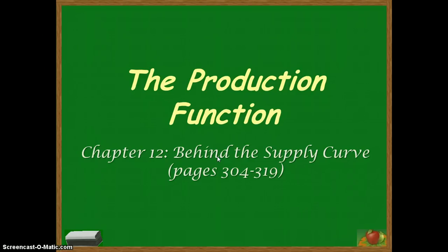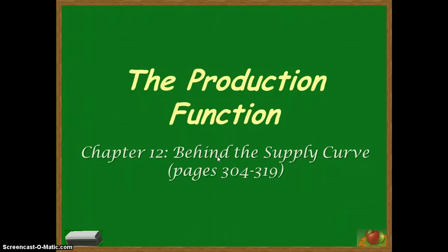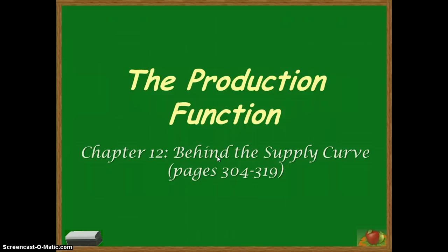What we're going to be looking at is trying to define what a production function is, and we'll talk about what the marginal product is and what it measures. We'll begin to look at some costs associated with the market, including fixed and variable costs, marginal costs, and average total fixed and variable costs. We're really going to begin to take a look at the supply end of things as we move towards an understanding of profit and loss.